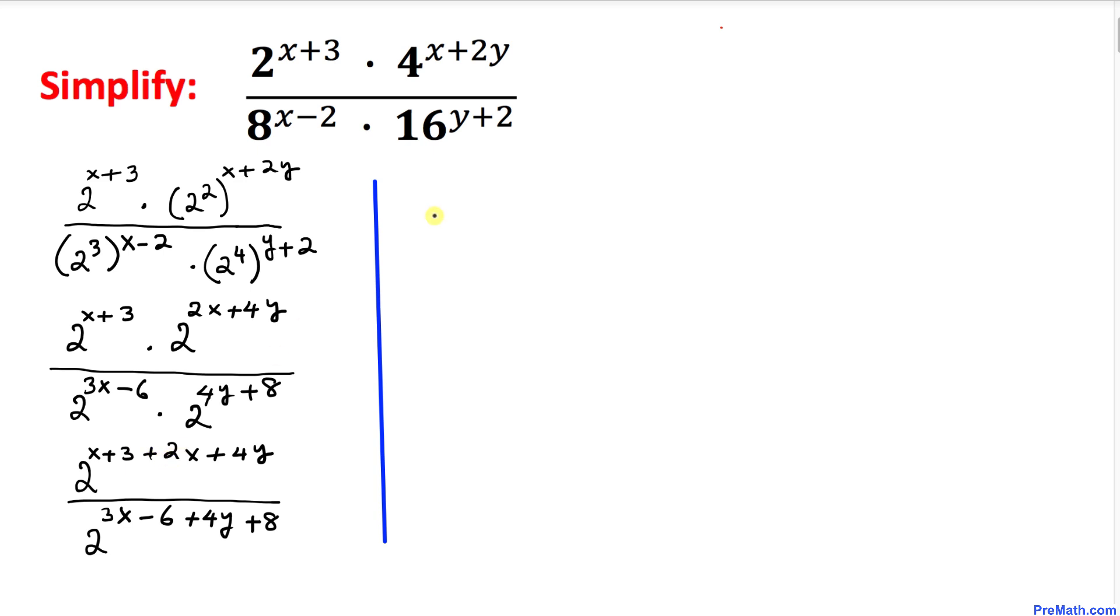Now let's simplify these exponents by combining like terms. This becomes 2^(3x+4y+3) divided by—simplifying the denominator exponents—2^(3x+4y+2).